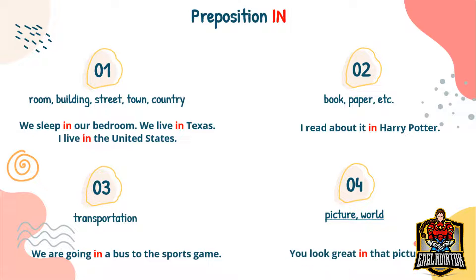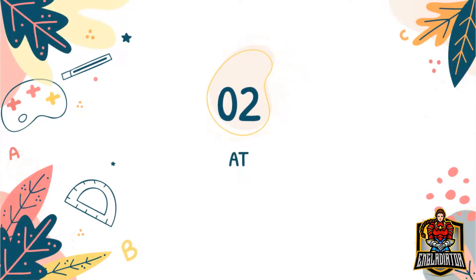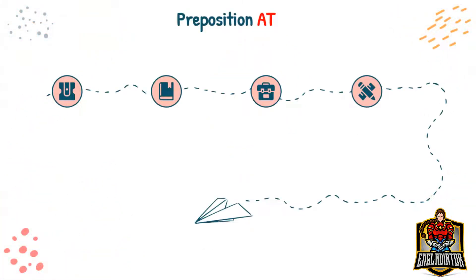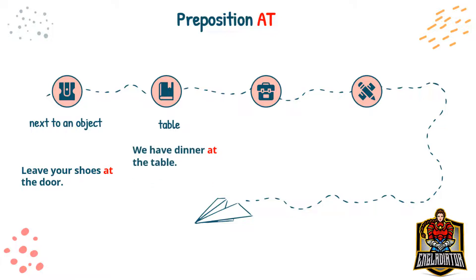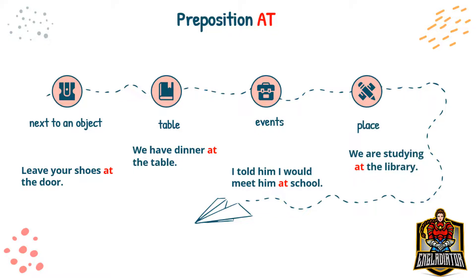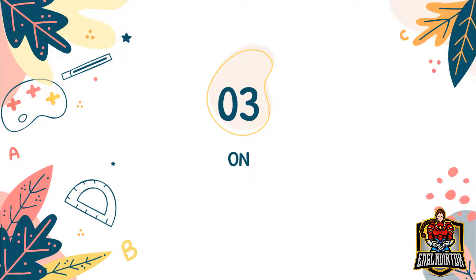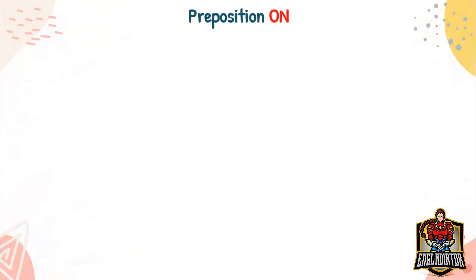Preposition 'at.' We use 'at' to say that something is next to or by an object. For example: leave your shoes at the door. We use 'at' for sitting at a table — for example: we have dinner at the table. We also use 'at' for events — for example: I told him I would meet him at school. We also use 'at' for a place where you are doing something — for example: we are studying at the library.